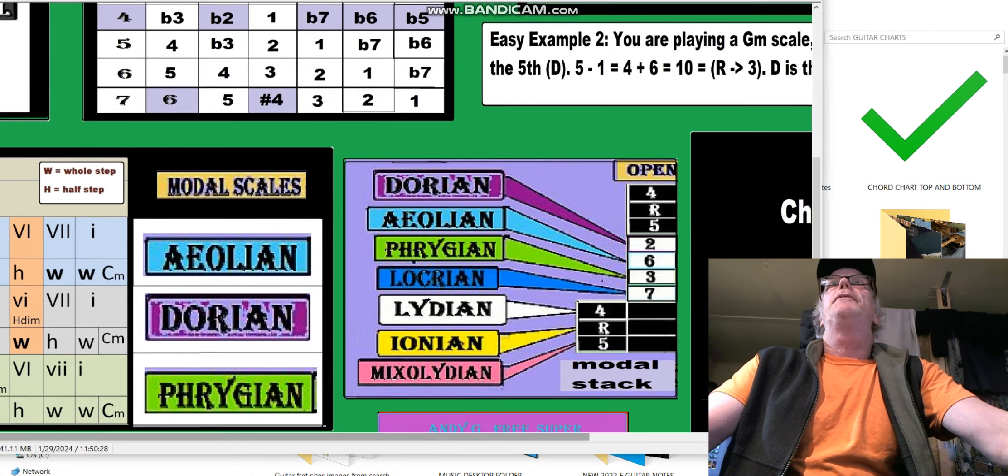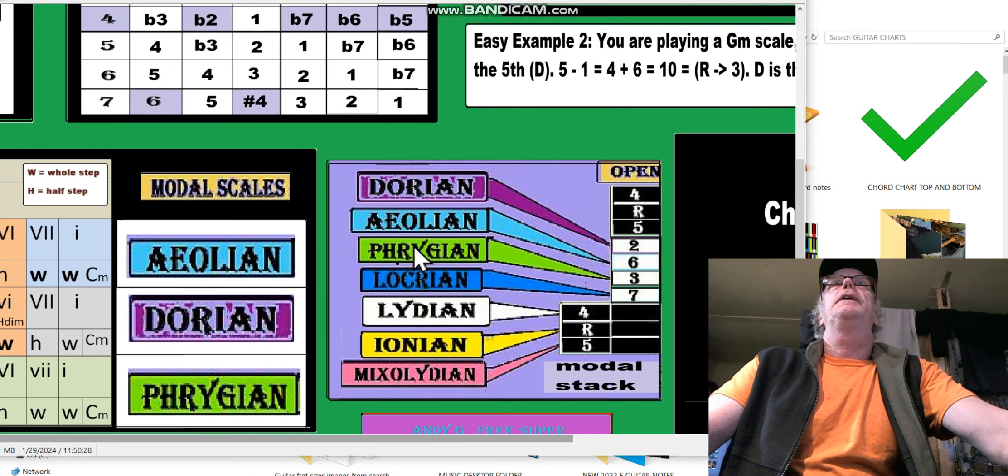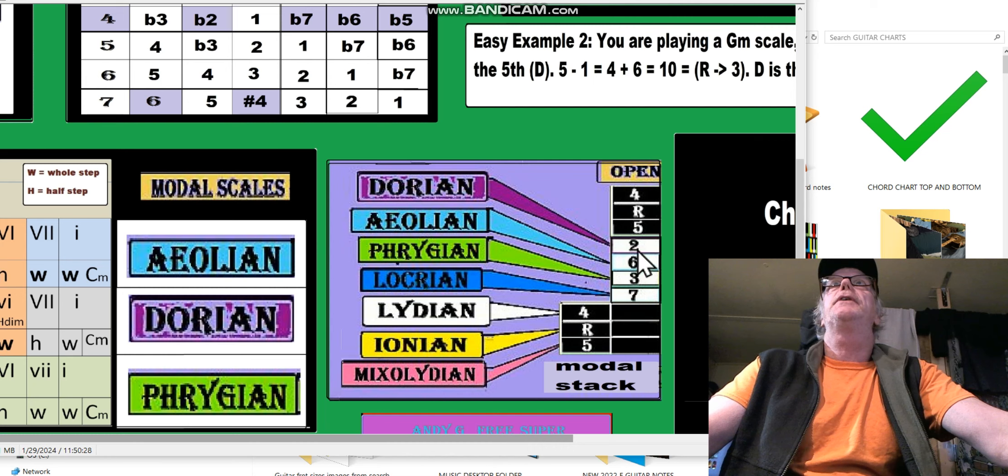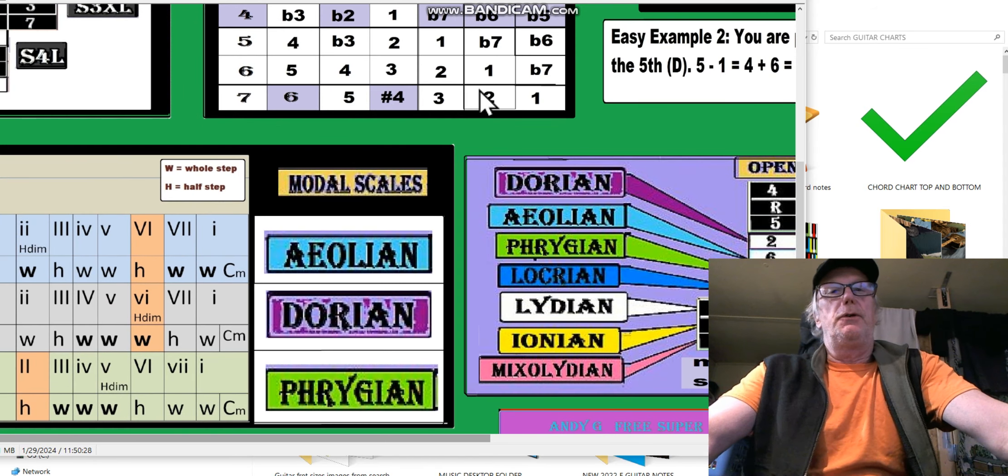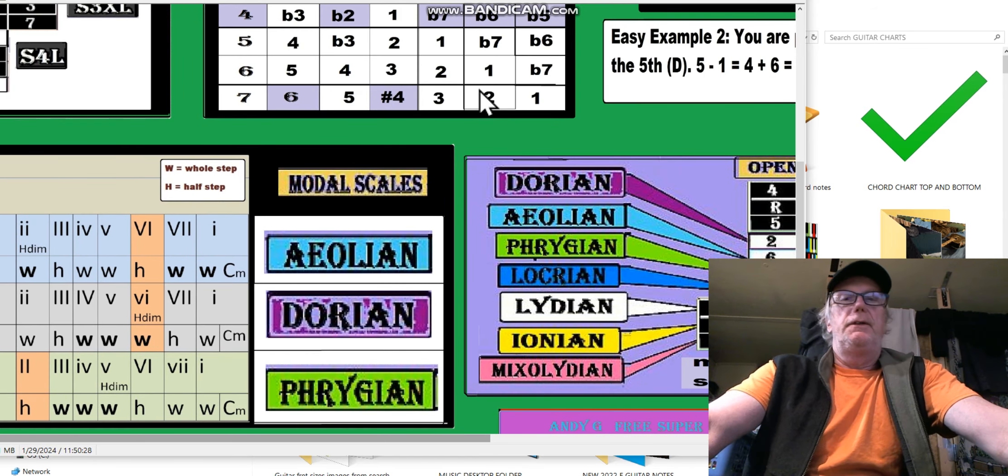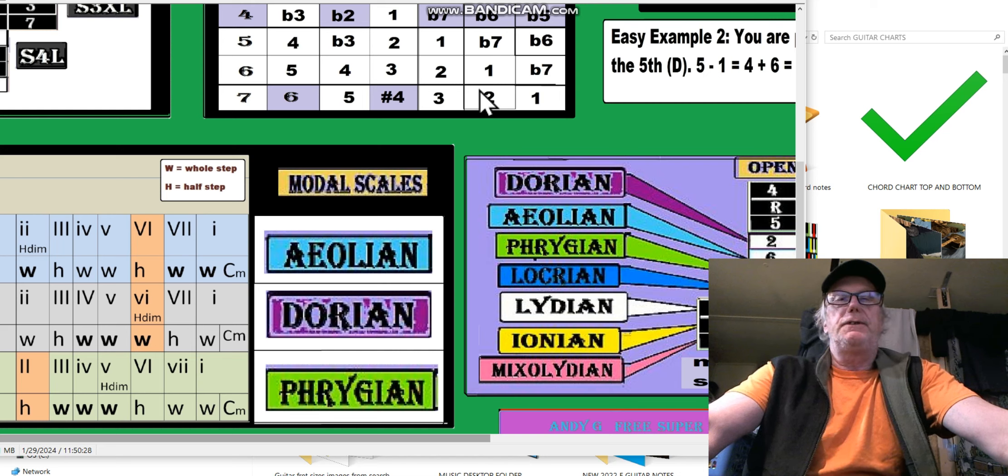Okay, so we have the three minors here: the Phrygian, Aeolian, and Dorian in that stack we were talking about. They're the three, the six, and the two - that's where they begin, where you begin the modal shapes. The G shape, the D shape, and the other minor would be the C shape, which is the Phrygian minor shape.